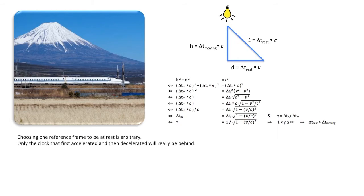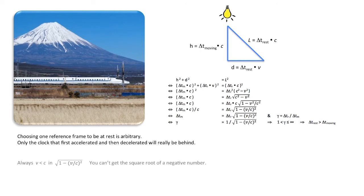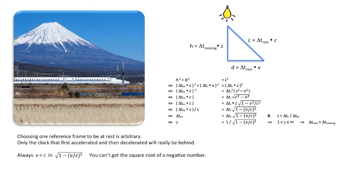Choosing one reference frame to be at rest is arbitrary. But only the clock that first accelerated and then decelerated will really be behind. Moreover, the velocity v must always be smaller than c, the velocity of light, because you can't get the square root of a negative number. So the time dilation, length contraction, or charge reduction is never bigger than 100 percent.